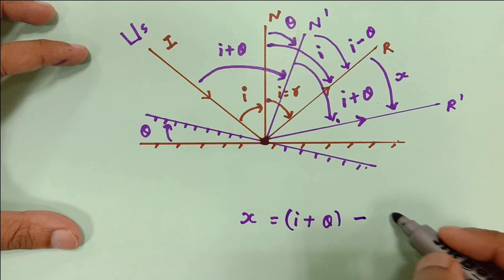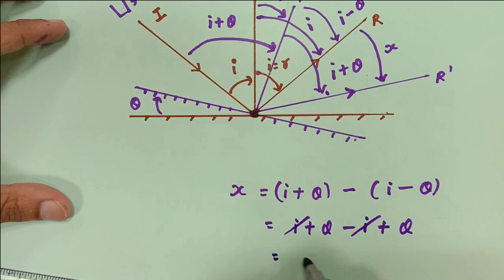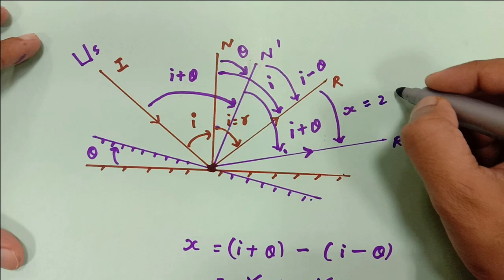If I open up the bracket: I plus theta minus I plus theta. These two I's get cancelled, so my answer is 2 theta. That means this angle is 2 theta.